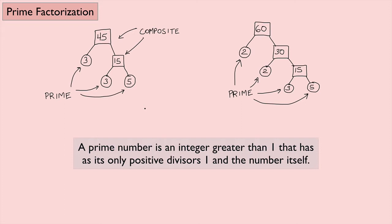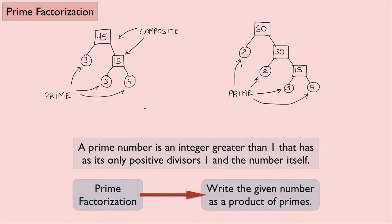So a prime number is an integer greater than 1. So that means that 1 itself is not a prime number. And if we look at the prime factorization of a number, that just means that we're going to write the given number as a product of primes. So 45, for instance, can be rewritten as 3 times 3 times 5 or 3 squared times 5. This is the prime factorization of 45.